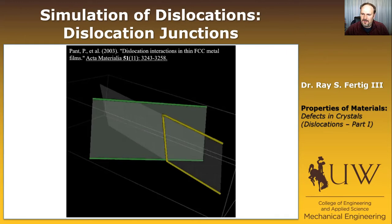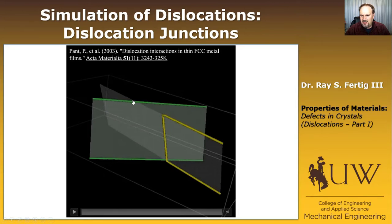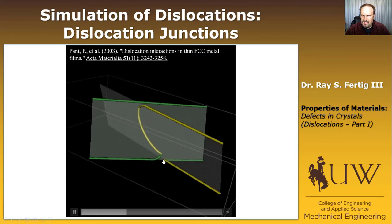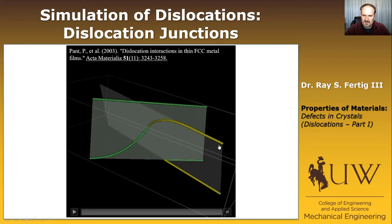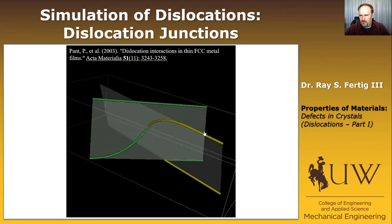Here's a video specifically focusing on a junction in a film. There are a couple of dislocations at the film interface and we're driving a dislocation into them. In this case there are annihilation reactions, and it turns out we've now got a new dislocation that exists on two different planes. This was work done in my research group when I was at Cornell.